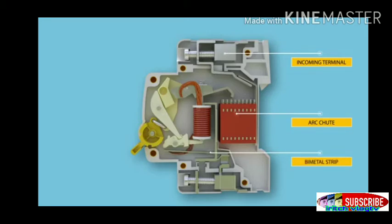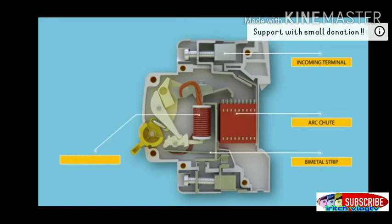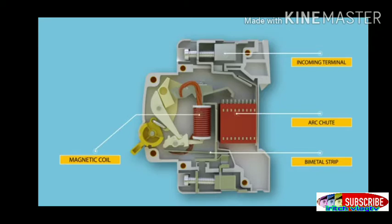The biometallic strip is part of the thermal tripping arrangement, around which a heater coil is wound to create heat depending on the flow of current. The magnetic coil is part of the thermal tripping arrangement where, in case of short circuit or heavy overloads, a strong magnetic field is produced in the coils.